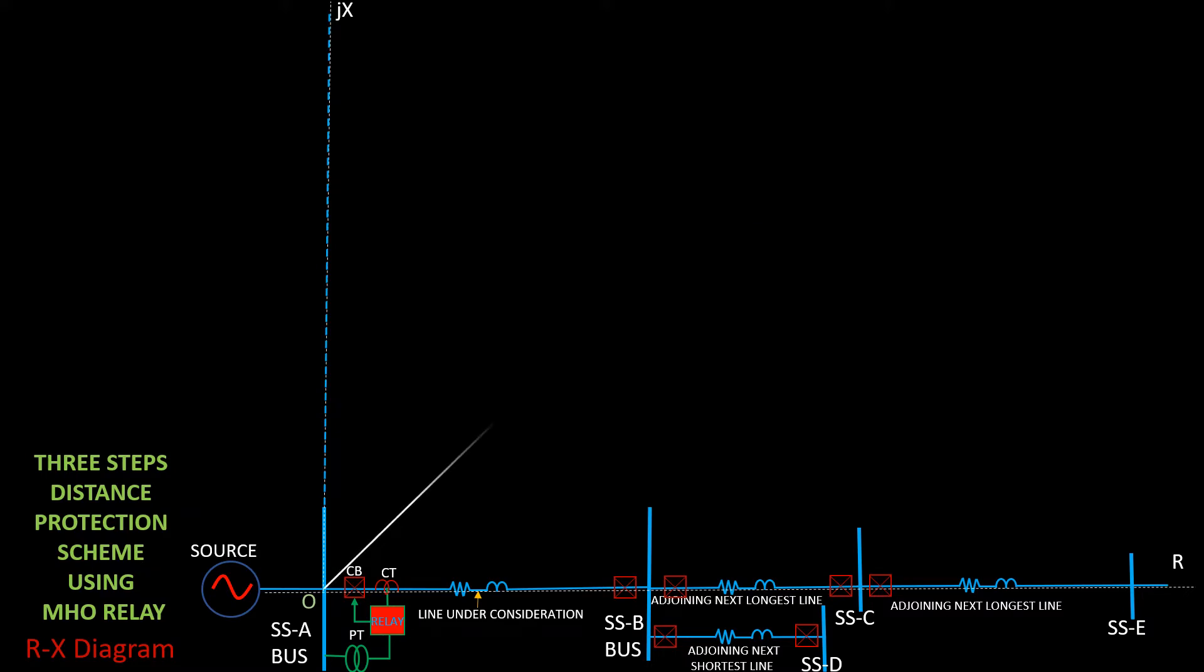Available line data impedance of the line as referred to secondary, shown with an impedance angle phi. Zab, the calculated impedance of line as referred to secondary.